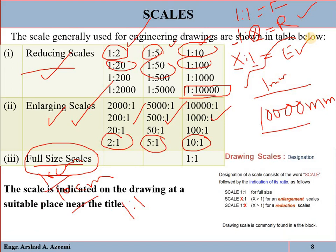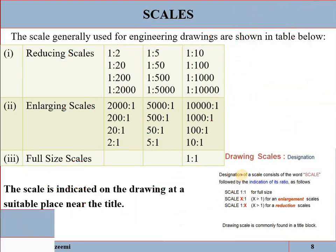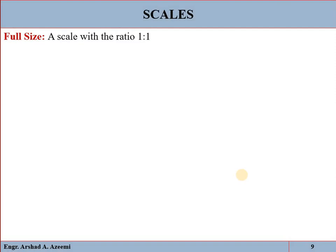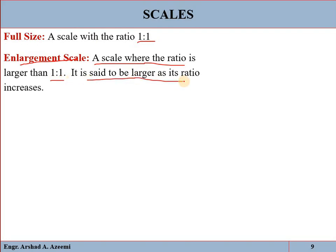The scale is indicated in a drawing at a suitable place near the title block. In the title block, you mention the scale of the object — for example 1:10 or 10:1 for reducing or enlarging scales respectively. Full size scale has ratio 1:1 with no reduction or increase. Enlargement scale is where the ratio is larger than 1:1 — it is said to be larger as its ratio increases. Reducing scale is where the ratio is smaller than 1:1.